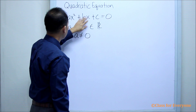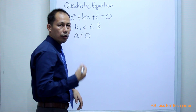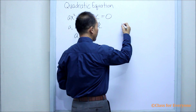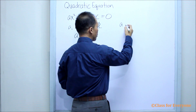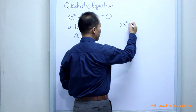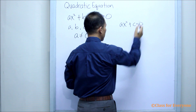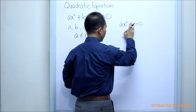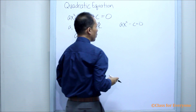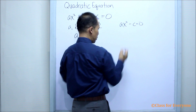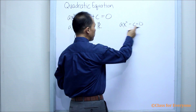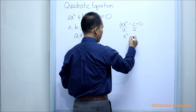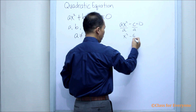Now, what happens if B is equal to zero? How can we find the roots? We can find the roots when B equals zero — we have AX squared plus C equals zero. Suppose C is negative. To find X, we divide all the terms by A, giving us X squared minus C over A.